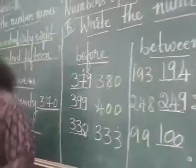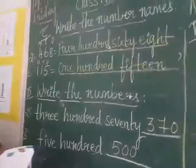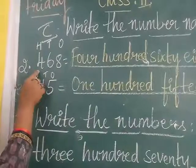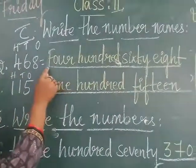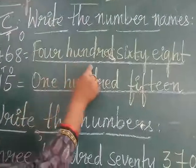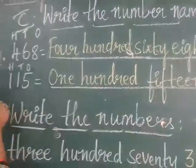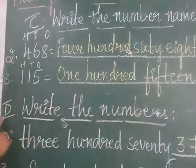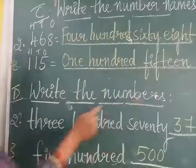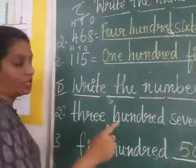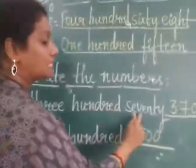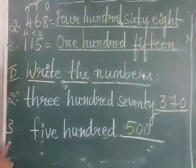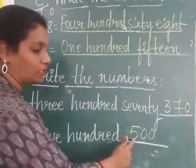Now the next one is C1 — write the number names. Here, 468 — you have to write in number. The second one: 168. The second one: 115. The D1 — write the numbers. They have given the numbers, you have to write: 3, 100, 6, 70. 3, 100, 70 — you have to write. The third one: 500 — means you have to write 500.